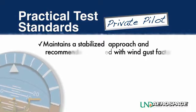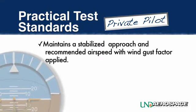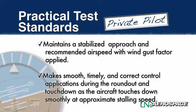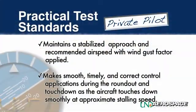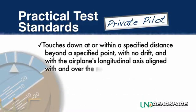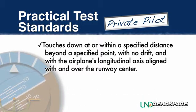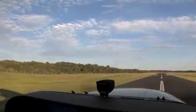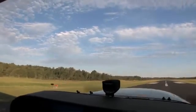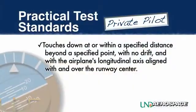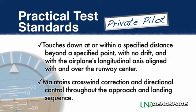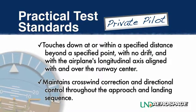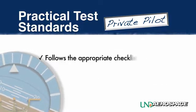They maintain a stabilized approach and recommended airspeed with wind gust factor applied. They apply smooth, timely, and correct control applications during the roundout and touchdown as the aircraft touches down smoothly at approximate stalling speed. They guide the aircraft to a touchdown at or within a specified distance beyond a specified point with no drift, and with the airplane's longitudinal axis aligned with and over the center of the runway. They maintain crosswind correction and directional control throughout the approach and landing sequence.